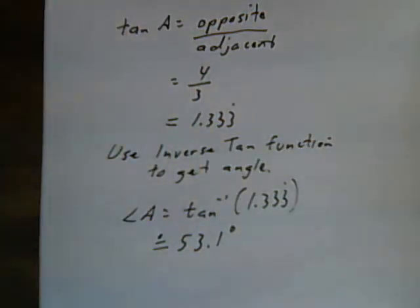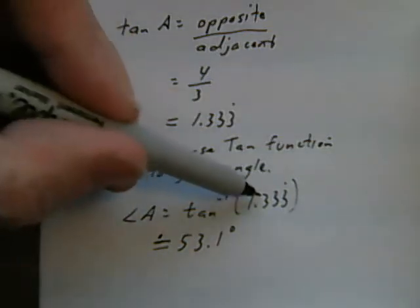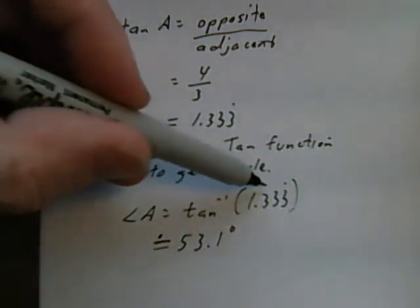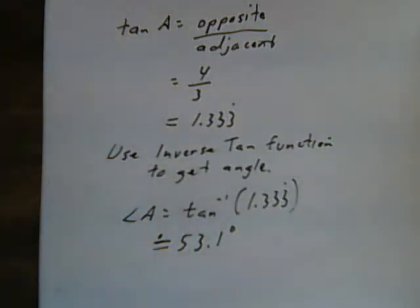And I'm going to put a little dot over my equal sign to indicate that it's an approximation because this is part of a number that goes on forever. So, this final answer has to be an approximation.